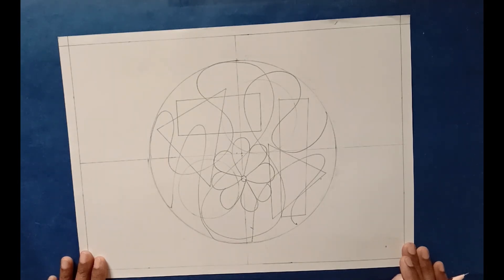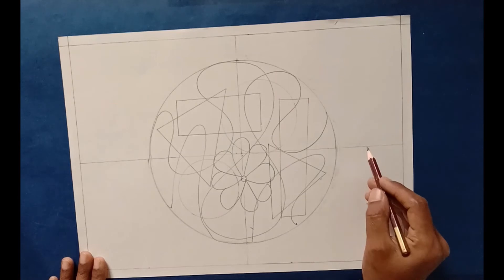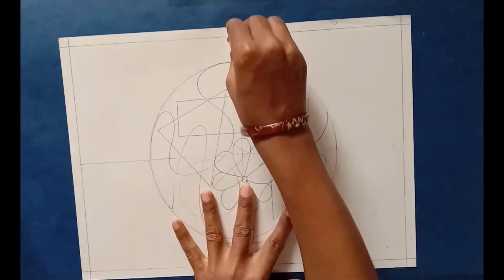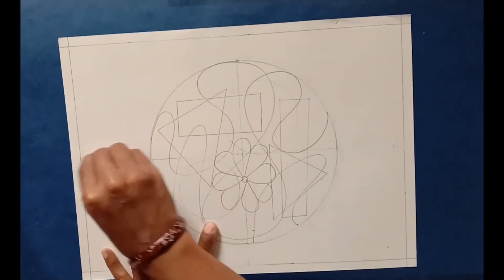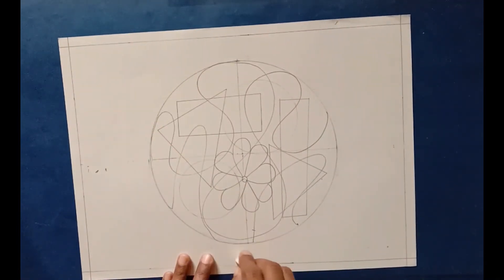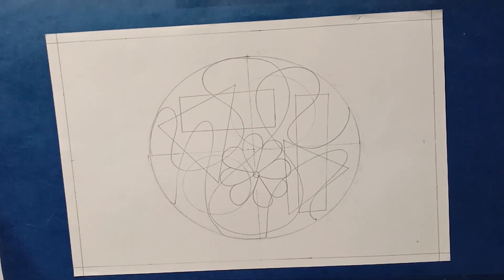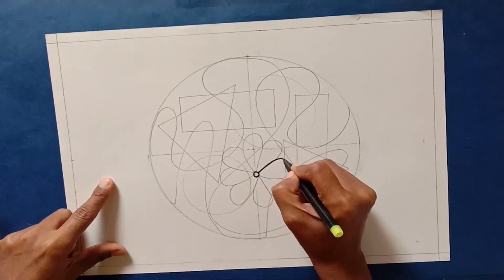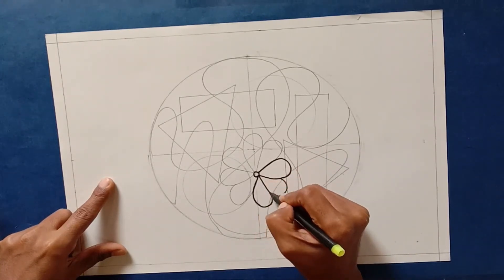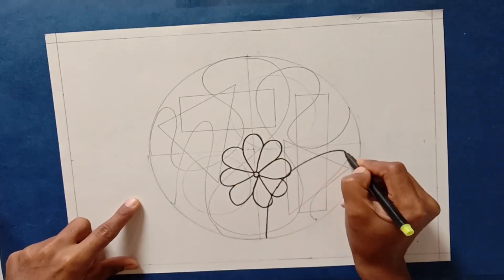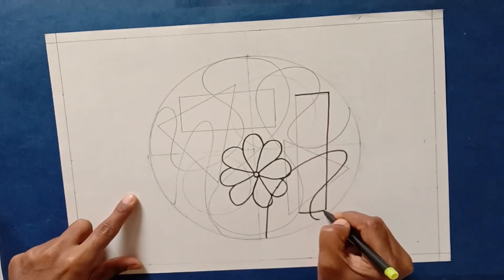In the next video you will see coloring for this. Before that, you must keep your drawing ready with outline. No need to do outline for the outer side of the circle, meaning these lines you can erase and other things you can outline.